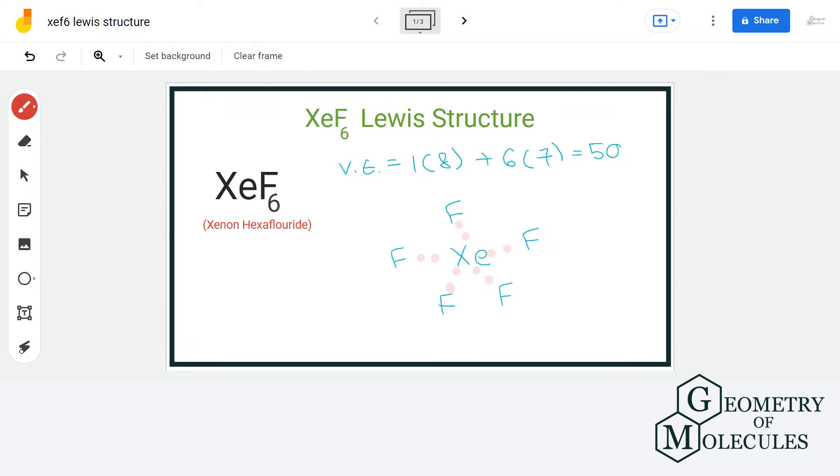Now as you can see, each fluorine atom needs six more electrons for complete octet. So let us go ahead and assign six electrons to each fluorine atom.